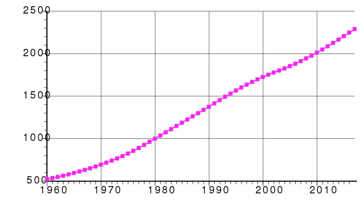This article is about the demographic features of the population of Botswana, including population density, ethnicity, education level, health of the populace, economic status, religious affiliations, and other aspects of the population. Botswana, like many nations in southern Africa, suffers from a high HIV infection rate, estimated among adults ages 15 to 49 to be 24.8%.